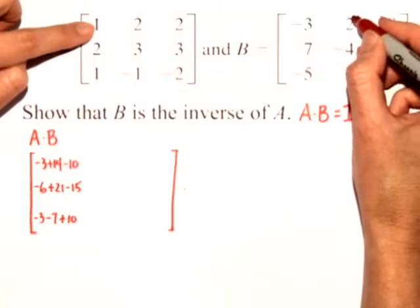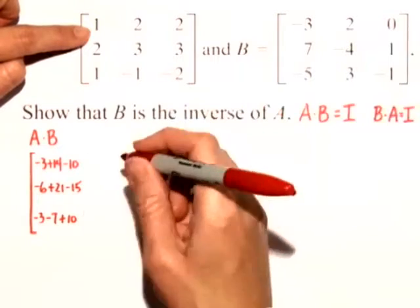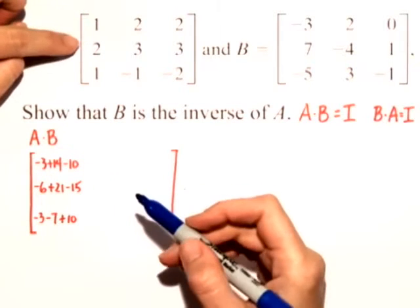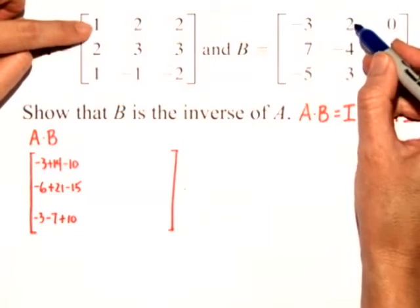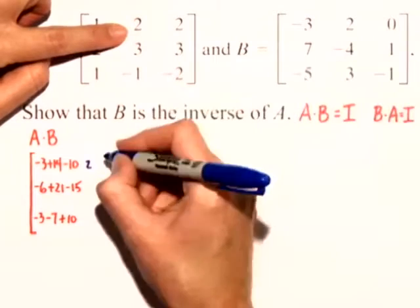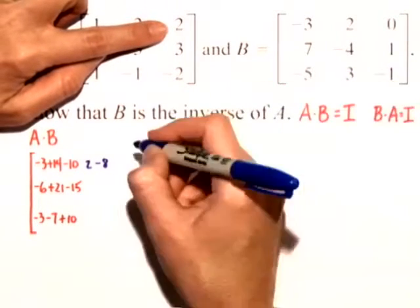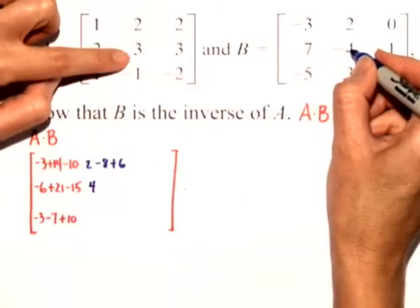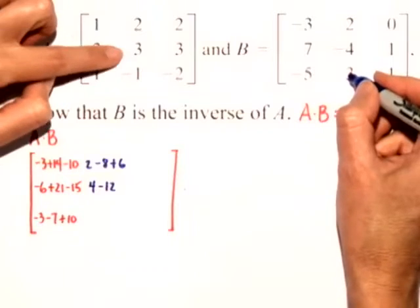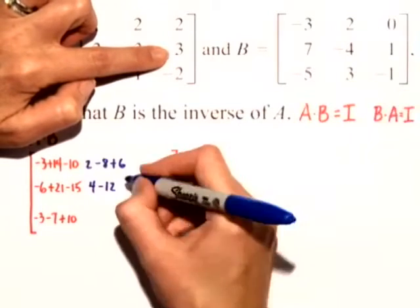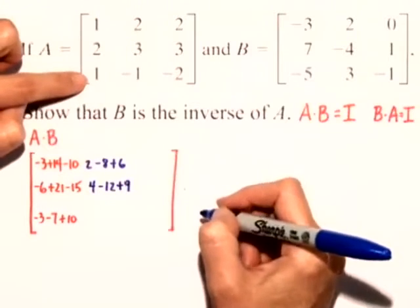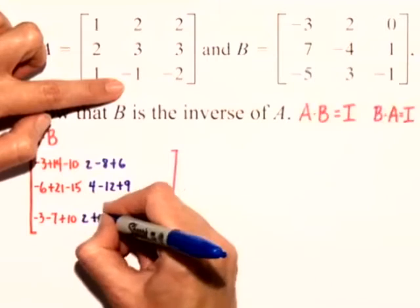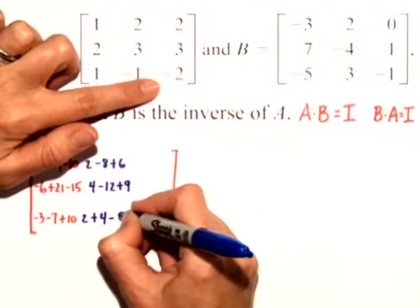Now we'll move on to row 1, column 2. I'm going to put the middle column in a different color so it doesn't run together. Row 1, column 2: 1 times 2 is 2, plus 2 times negative 4 is minus 8, plus 3 times 2 is 6. Next, row 2, column 2: 2 times 2 is 4, plus 3 times negative 4 is negative 12, plus 3 times 3 is plus 9. Finally, row 3, column 2: 1 times 2 is 2, plus negative 1 times negative 4 is 4, plus negative 2 times 3 is negative 6.